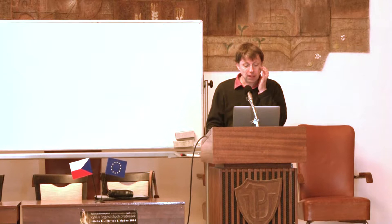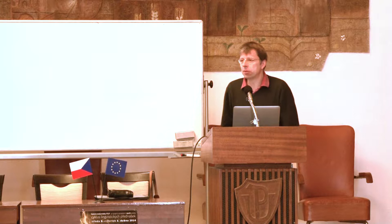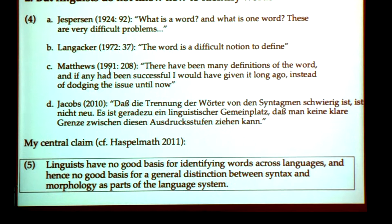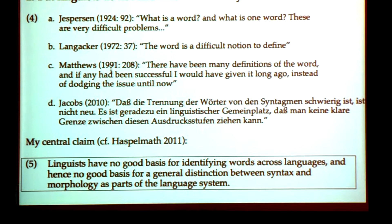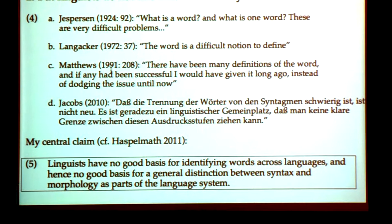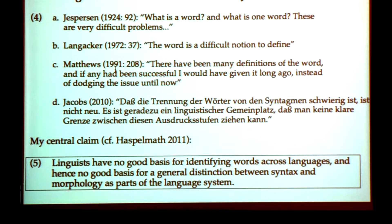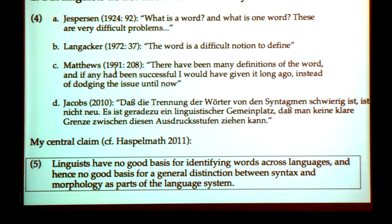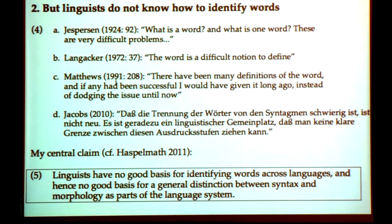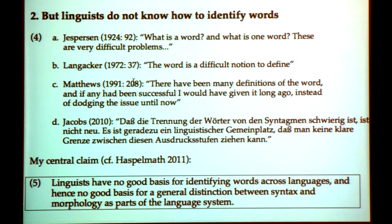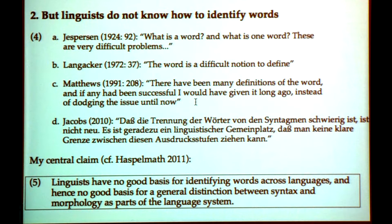Textbooks reveal that people who have taken a closer look have long been aware of the big problem. Jespersen asked: what is one word? These are very difficult problems. Langacker called the word a difficult notion to define, then spent 25 pages trying. During the structuralist period around the mid-20th century, many linguists worried about how to define word — Langacker 1972 was the last such attempt. After 1972, people just assumed there was such a thing as a word, or assumed there wasn't. My favorite statement is Matthews: 'There have been many definitions of the word. If any had been successful, I would have given it long ago, instead of dodging the issue until now.'